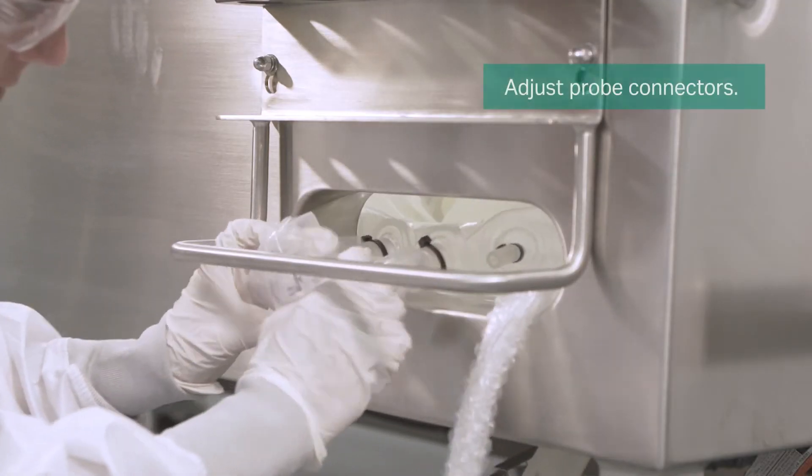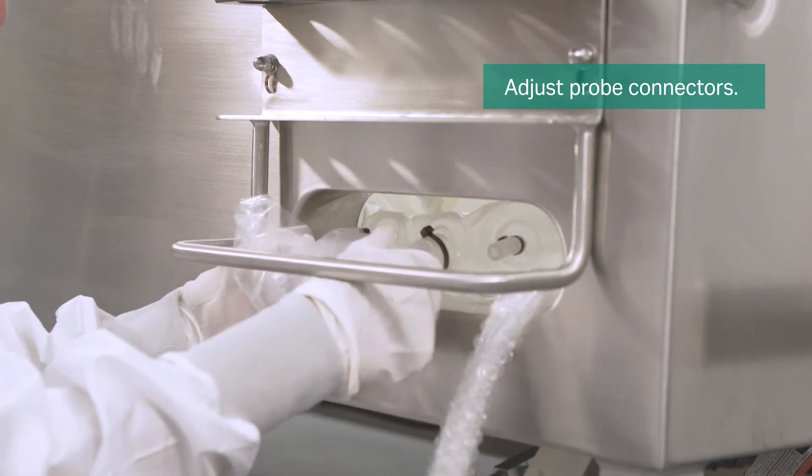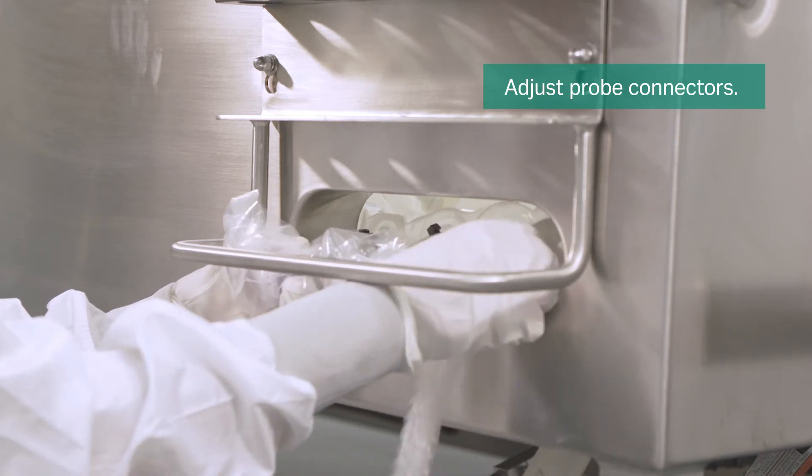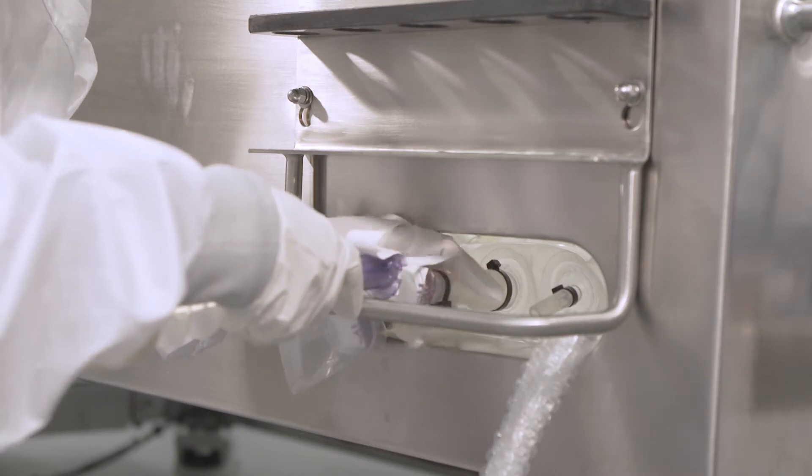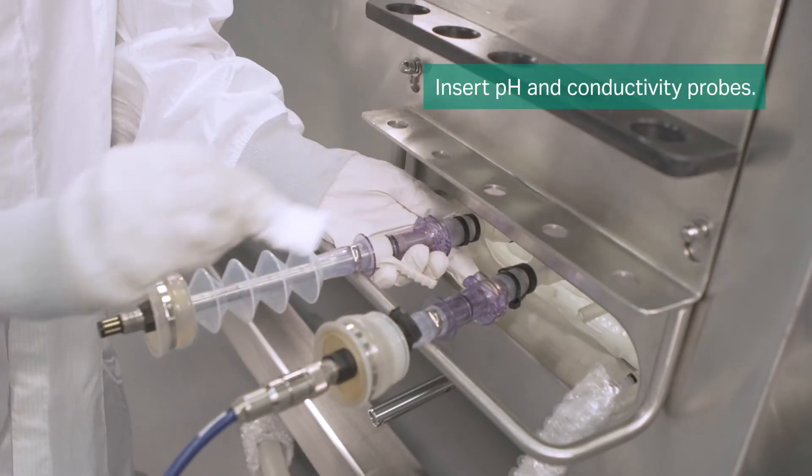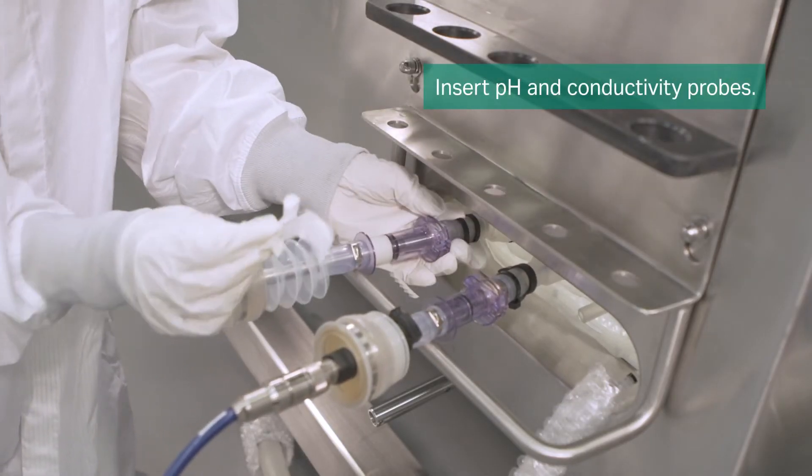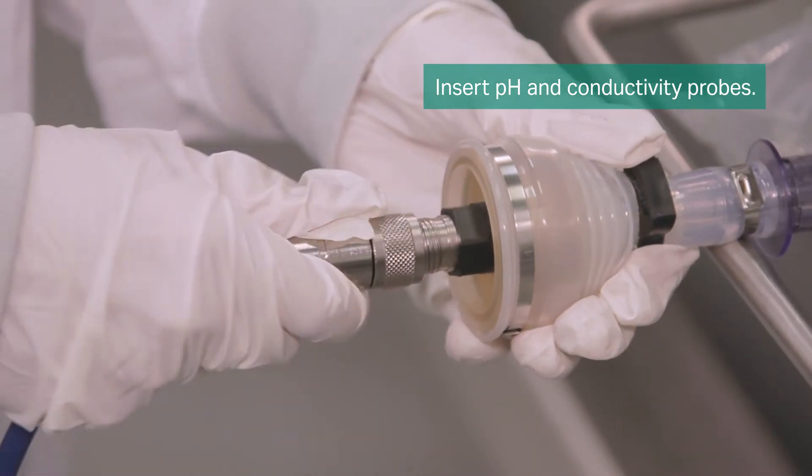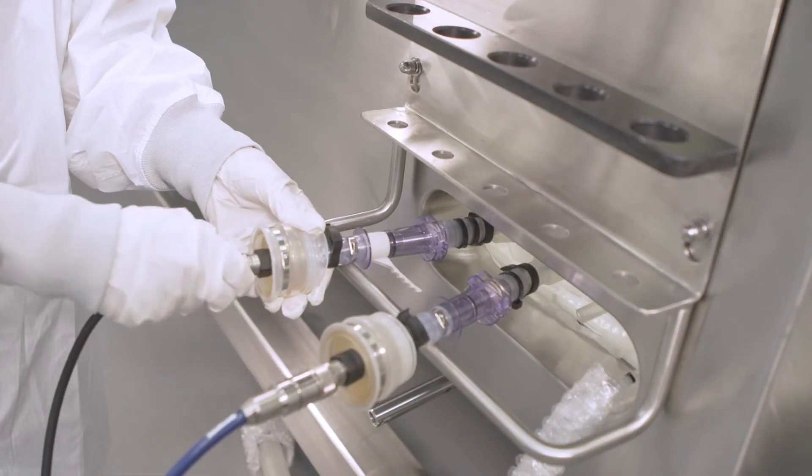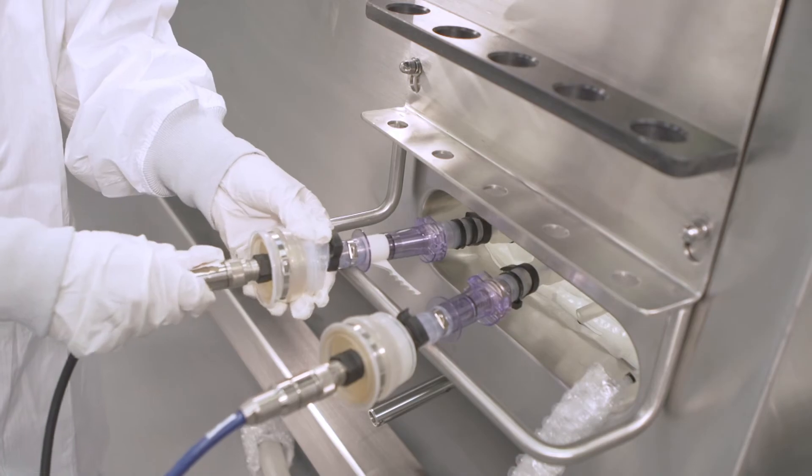If you are installing a plus bag assembly, adjust the probe connectors by gently pulling them through the probe window. Once the pH and conductivity probes are calibrated and autoclaved, insert the probes into the bag via the KPC ports.